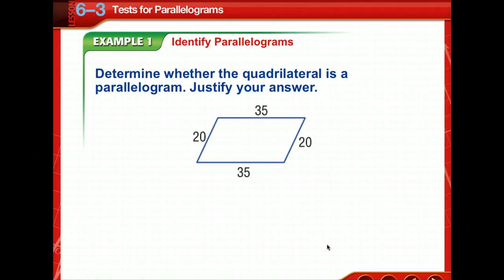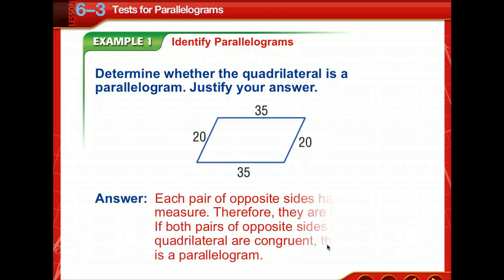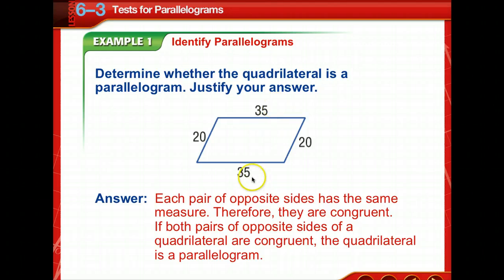So let's determine whether this quadrilateral is a parallelogram, and we need to justify our answer. What you notice is that each pair of opposite sides of this parallelogram has the same measure. Therefore, they're congruent, because if both pairs of opposite sides of a quadrilateral are congruent, then that quadrilateral is a parallelogram.